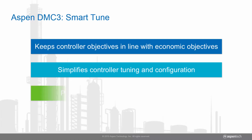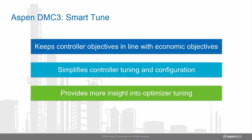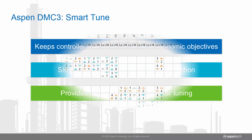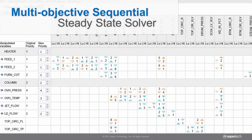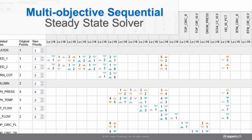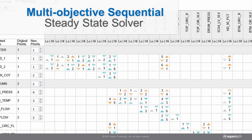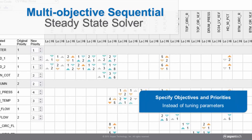The new web-based strategy view provides engineers and operators more insight into optimizer tuning and online controller strategy. SmartTune is a multi-objective sequential steady-state solver for Aspen DMC3's engine.